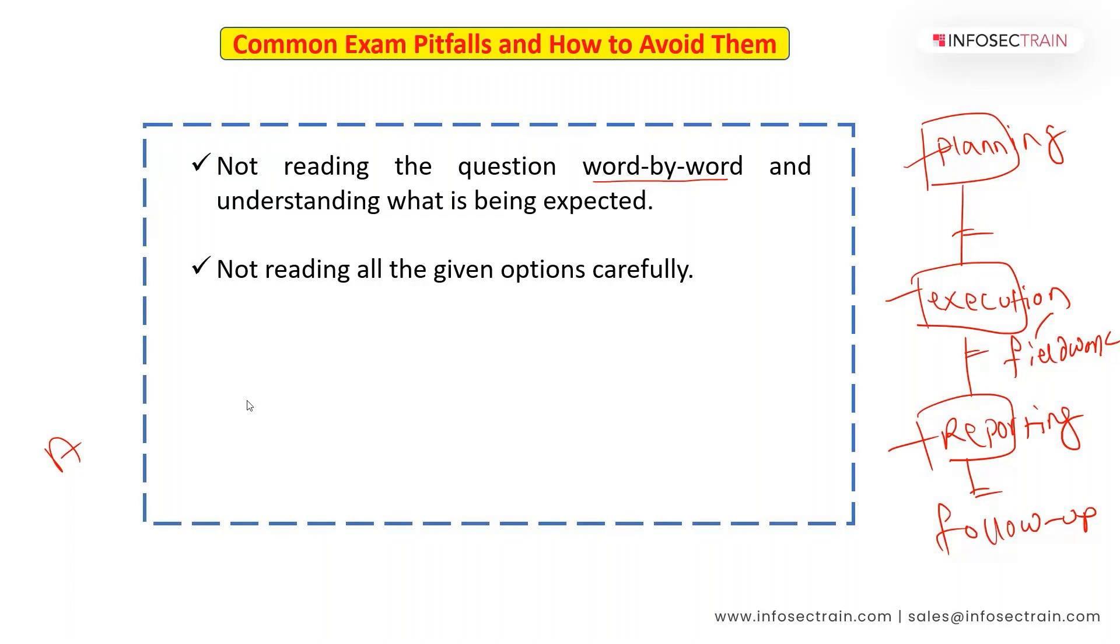and you find A to be the most suitable, you select A and go ahead. Never do that. Even if you know the answer, please read other options carefully - A, B, C, D all - and then decide. Out of all four, if you think A is the most suitable, select that and go.